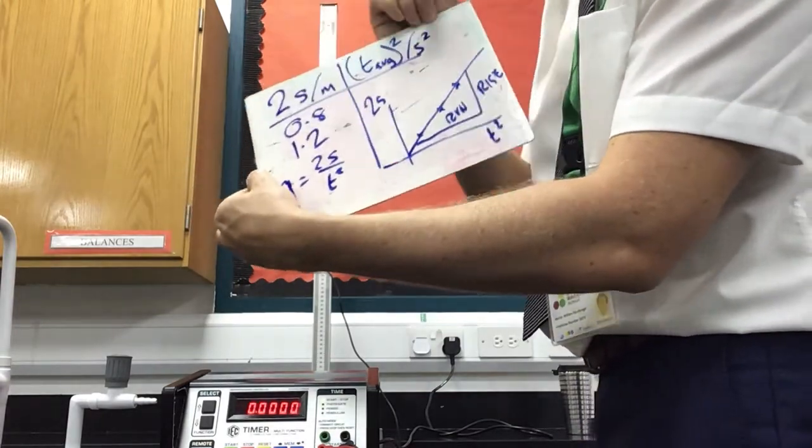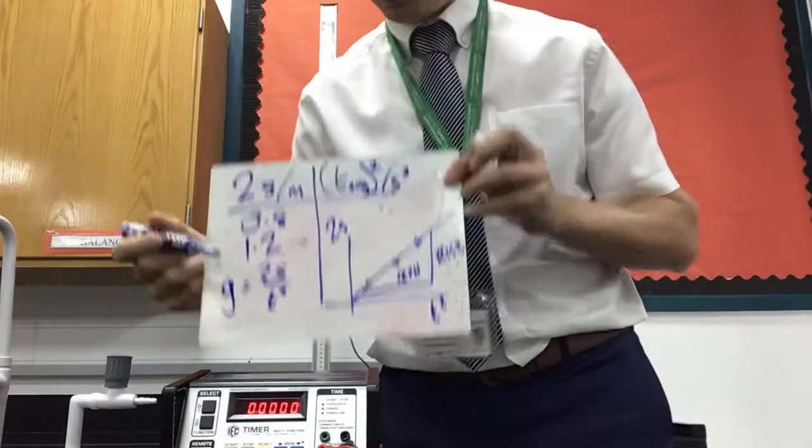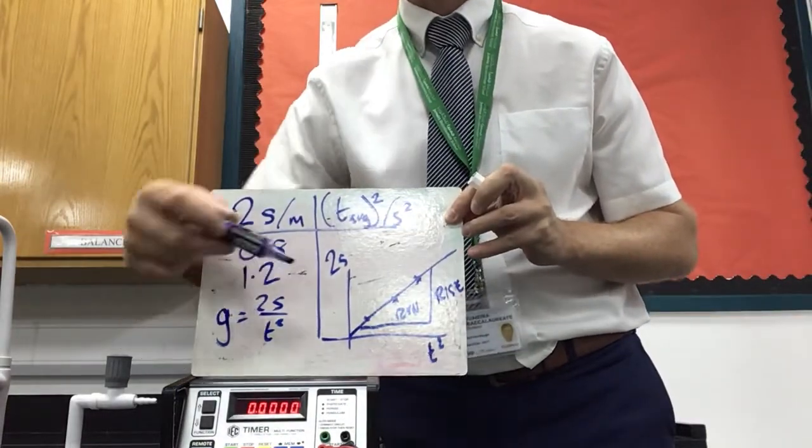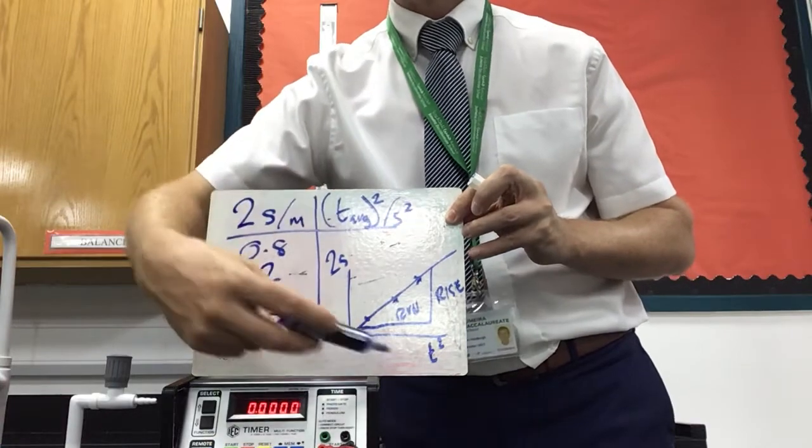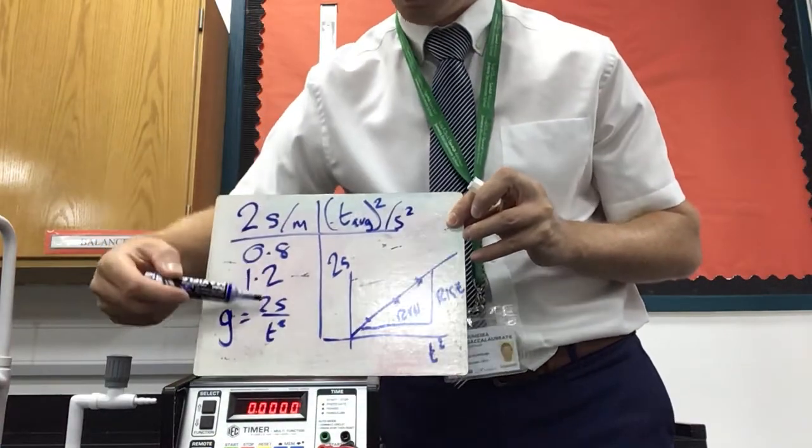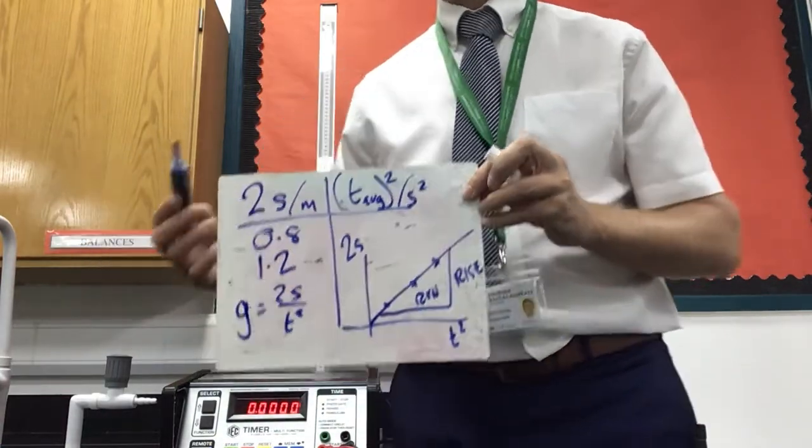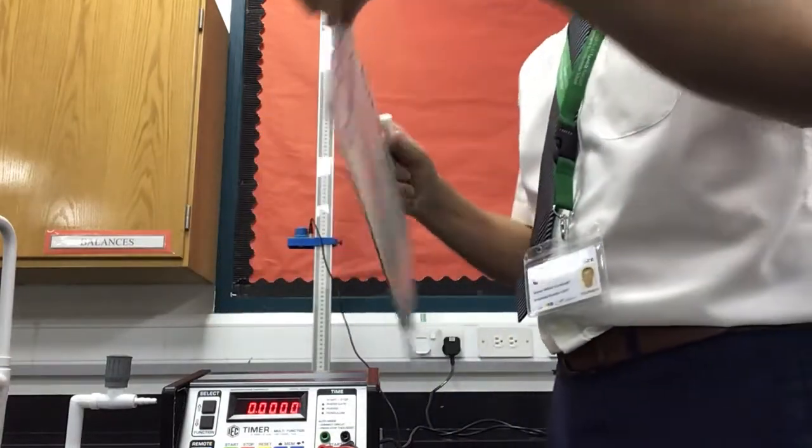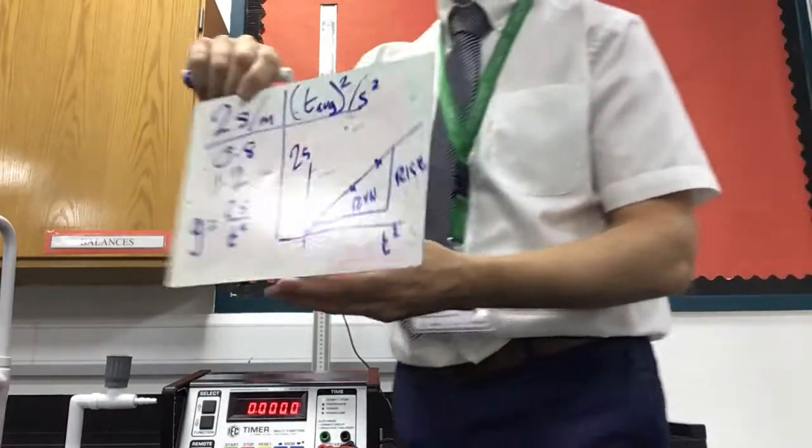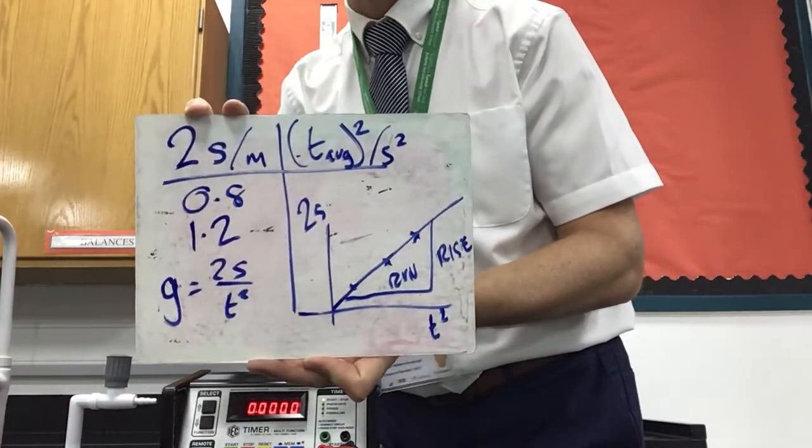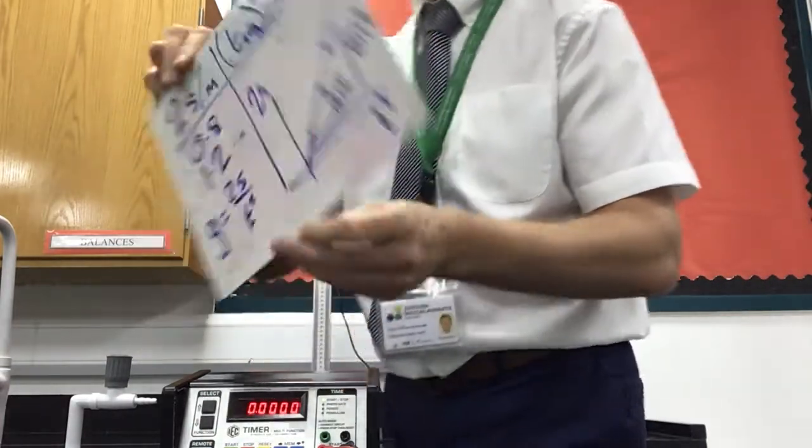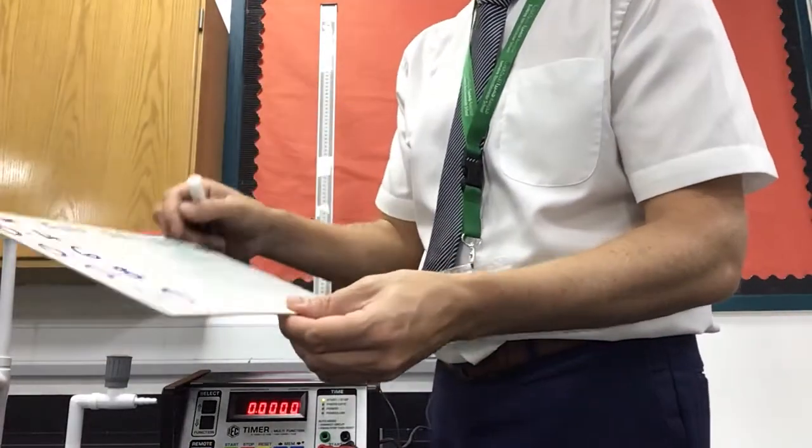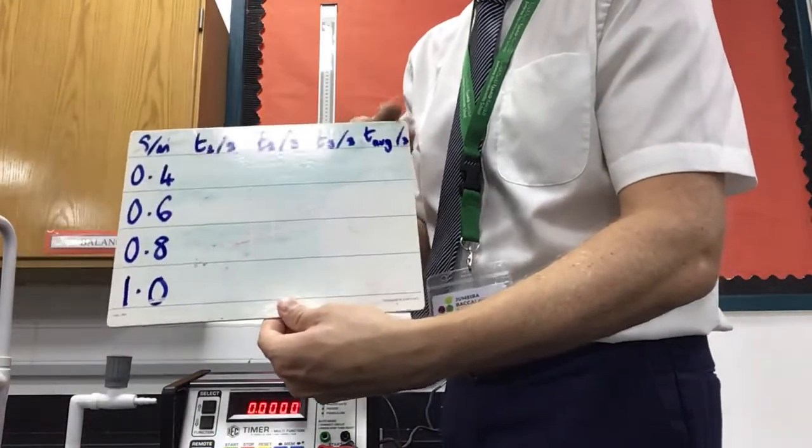Sorry, G is 2S over T squared. Therefore, if you plot a graph of 2S against T squared, the gradient, the rise over the run, would give you gravity. So that's going to be your writer. That's for you to do. But this is just going to be me doing the results. I'm not even going to calculate T average for you. You can do that.